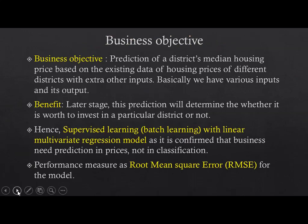Consider some geographical location where you have different districts. Each district has a median housing price based on existing data, and you also have other parameters like population and the area of the district. We have various inputs and their outputs, and what we need to find is the predicted district median housing price. In a later stage, this prediction will determine whether it is worth investing in a particular district for real estate purposes — that is the business benefit.